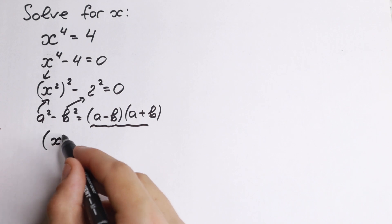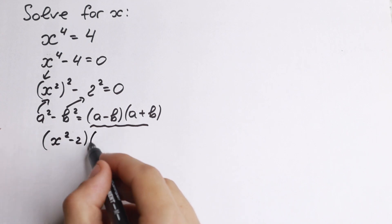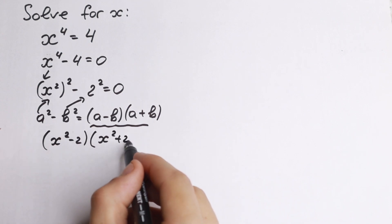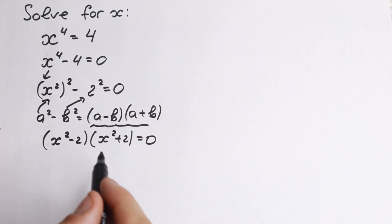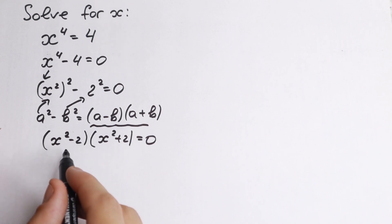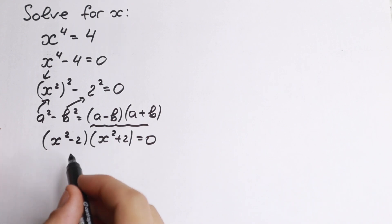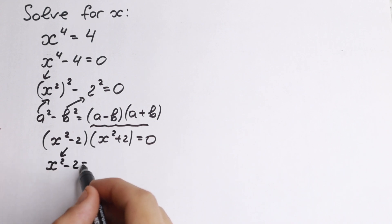We will have x squared minus 2 and x squared plus 2 equal to zero. So this is our formula, and moreover we have two parentheses. We have a product equal to zero, so we will have that these parentheses equal to zero, so x squared minus 2 equal to zero.